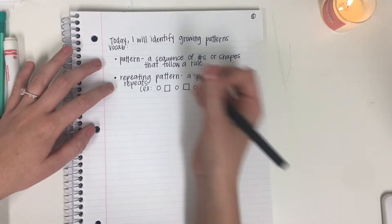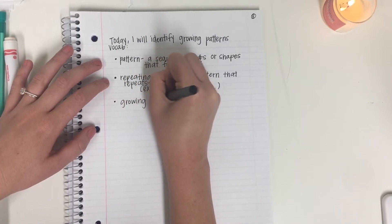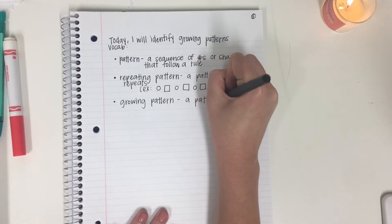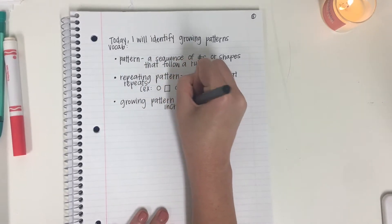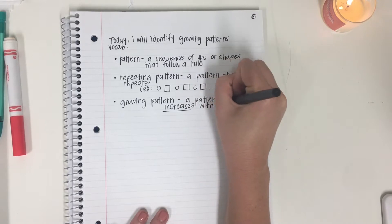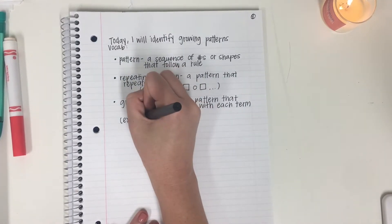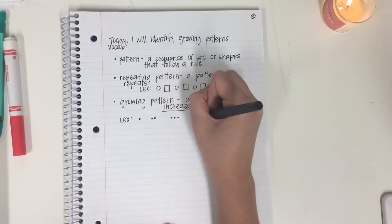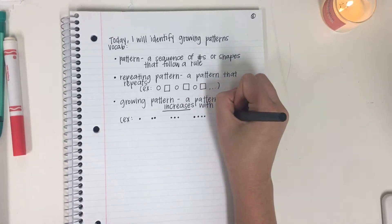The next kind of pattern is a growing pattern, which is what we're going to look at today. A growing pattern is a pattern that increases with each term. For example, you might have one circle, then the next term we have two circles, then three circles, then four — and then what do you think comes next? Five. So that's what we call a growing pattern.